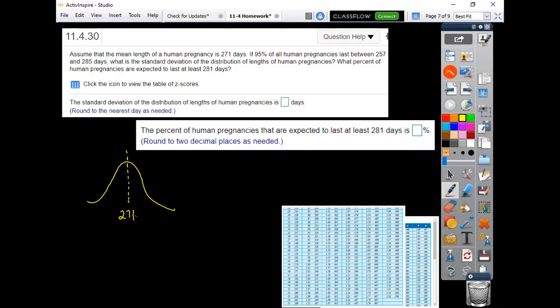And then what it says is, 95%, so remember 95% goes out two standard deviations. So from here to here, that would be two standard deviations, and they say 257 up to 285.